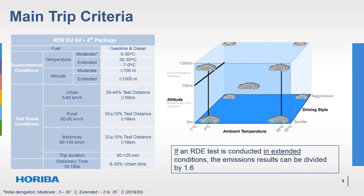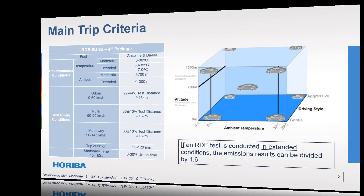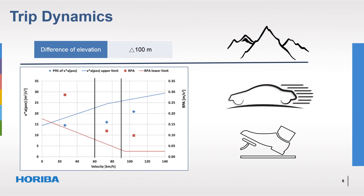An adjustment factor of 1.6 is applied should the vehicle be tested in extended temperature or altitude conditions outside of the ranges defined as moderate. It is also worth noting that market fuels must be used, not the reference fuels used in the chassis laboratory test. As part of the route design, the altitude at the end of the test must be within 100 metres of the altitude at the beginning, and the integrated altitude increase over the test must be less than 1,200 metres per 100 kilometres of road.